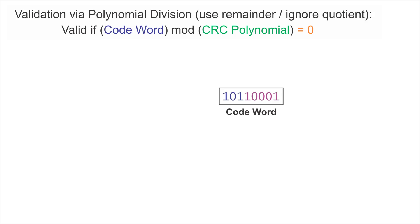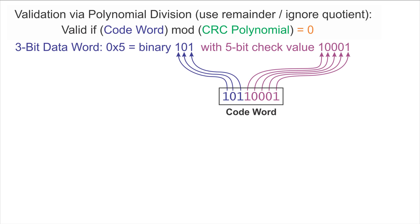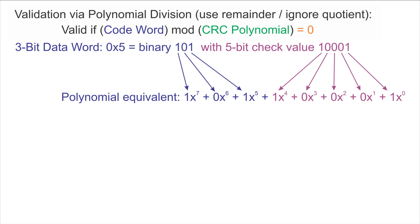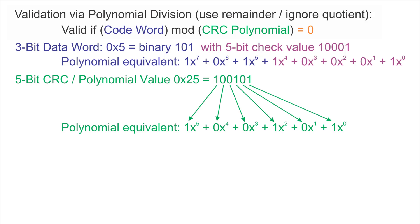We start with an example codeword of 10110001, which we know is a valid 8-bit codeword. It has a 3-bit data value and a 5-bit check value. These 8 bits correspond to a polynomial, the top three coefficients of which are the data word and the bottom five coefficients of which are the check value. We use the same polynomial used to compute the check value in order to determine whether the codeword has retained its integrity.